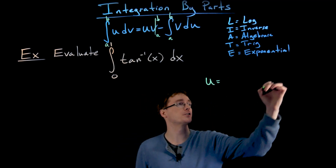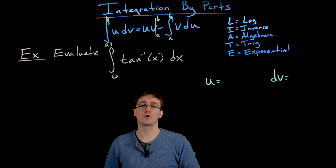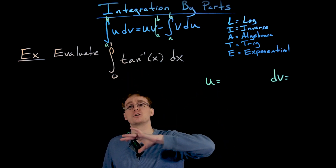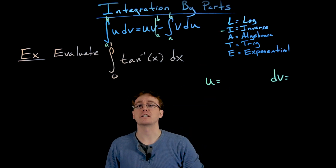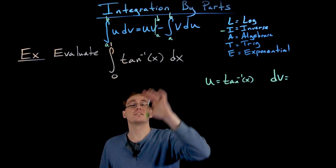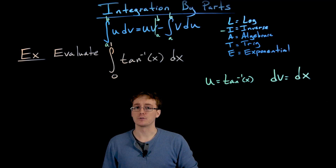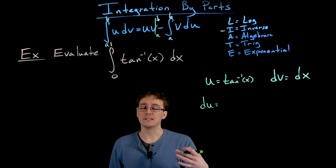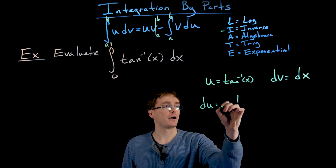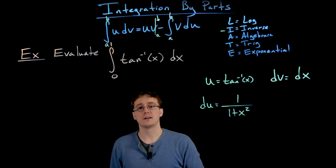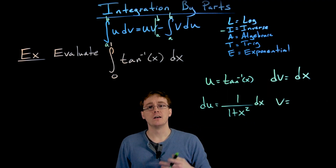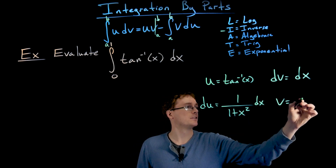We start by choosing u and dv, and from those choices du and v are determined. Using the LIATE acronym, we really only have one function here — inverse tangent, an inverse trig function — so that's our choice for u. The only other piece left is dx, which will be dv. So du equals 1 over 1 plus x squared times dx, and v equals x.